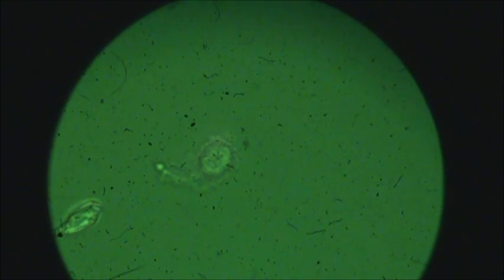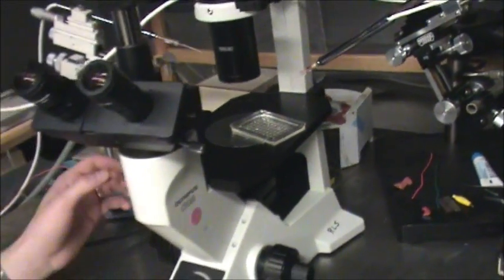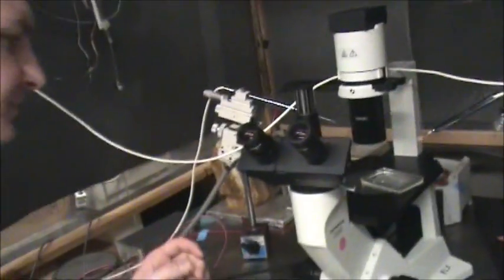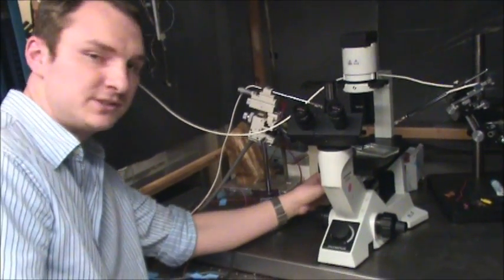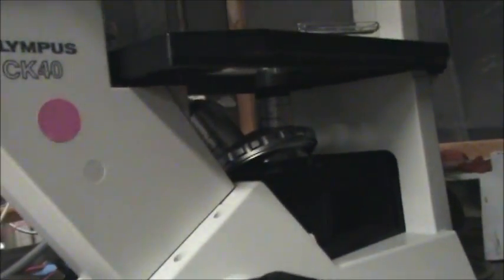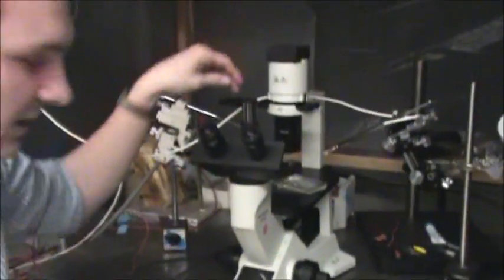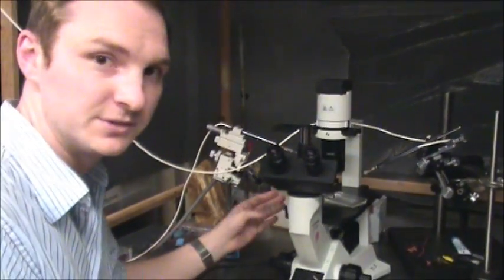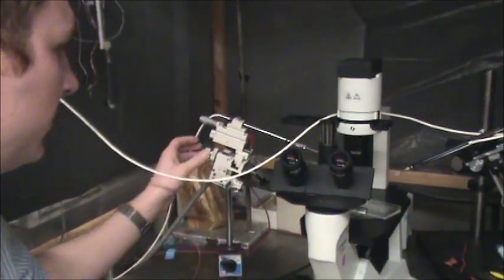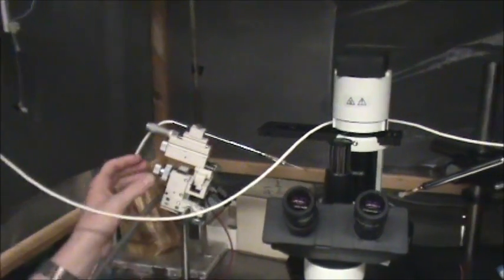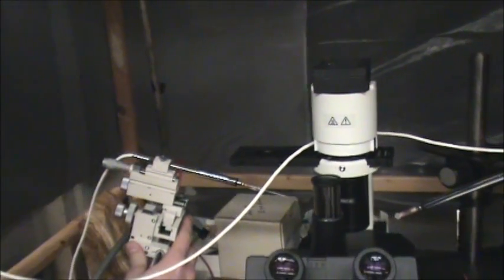So this is the upright microscope. The objective lenses are down on the bottom, so the light's coming down through and then we're seeing it from the bottom and through the side piece. You can imagine this makes it easier to come in with our intracellular recording electrodes and bring these down and get down into the dish.